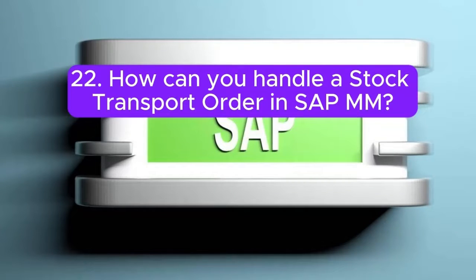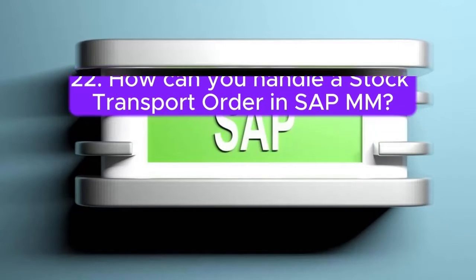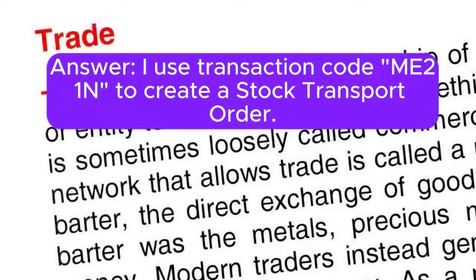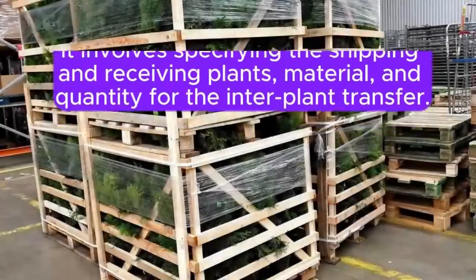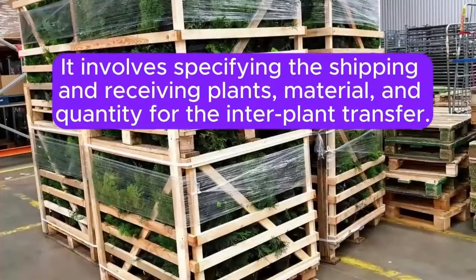Question 22: How can you handle a stock transport order in SAP MM? Answer: I use transaction code ME21N to create a stock transport order. It involves specifying the shipping and receiving plants, material, and quantity for the inter-plant transfer.